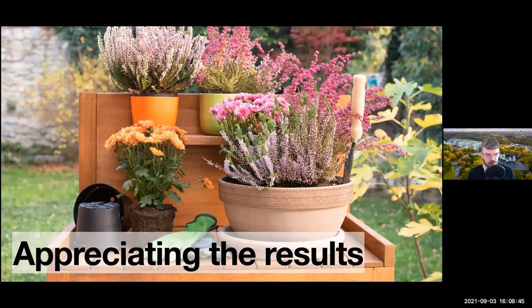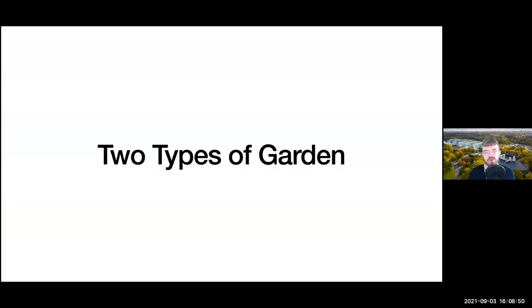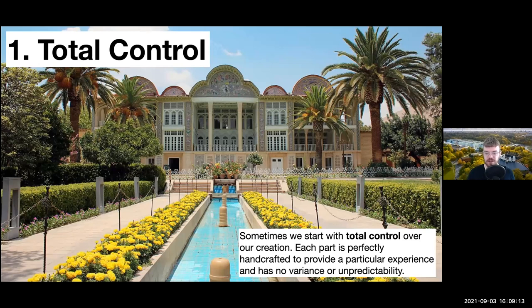There are two extreme types of garden that relate well to the types of content we put in games. In some gardens, we have complete control over everything — like this ornamental garden from Iran, where every flower, tree, pathway, and hedge has been precisely placed. We can think of these as similar to when we make content for our games by hand — placing every individual bit of content in the world, the soundtrack, the storyline, exactly where we want it. It's perfectly designed, with nothing uncontrollable or unpredictable about it.